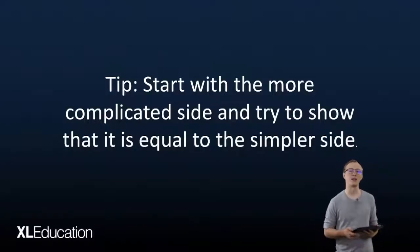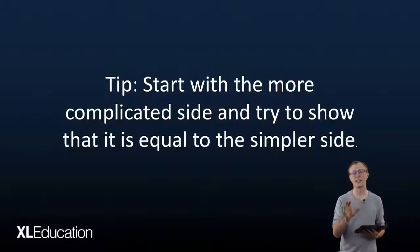My first tip would be to look at the identity, see which side is more complicated, and start on that side and try to simplify it to show that it is equal to the simpler side.